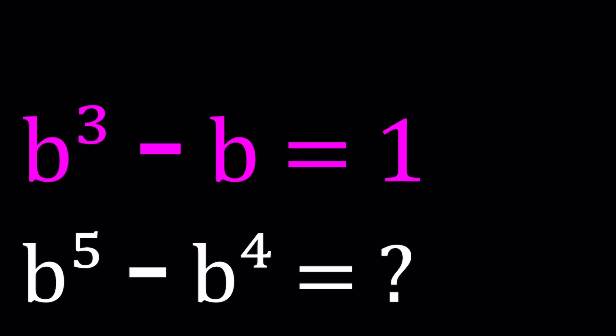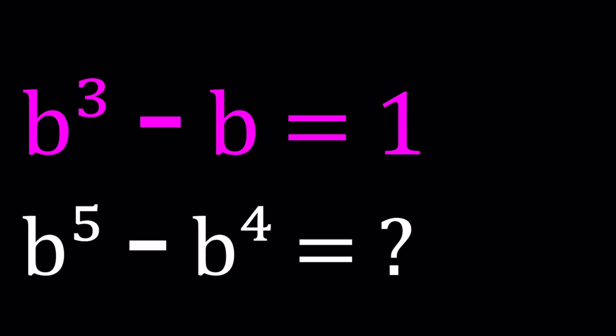Hello everyone. In this video, we're going to be solving a really nice problem with polynomials. This problem comes from a math competition, but I can't remember where this problem appeared. So if you do know, please let us know in the comment section. We're given that b cubed minus b is equal to 1, and we're supposed to evaluate numerically b to the 5th minus b to the 4th for the b values that come from the first equation.